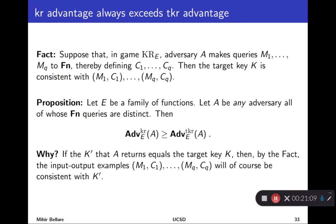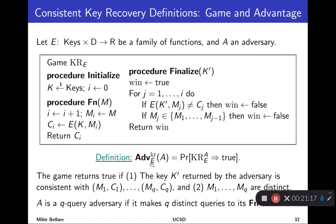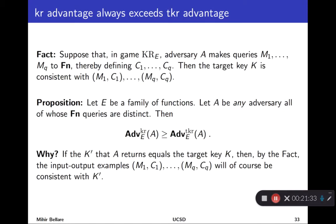So, how do we kind of think about or understand these different metrics? Well, I guess I forgot to say over here, first off, that again, as usual, there's a probability of winning the game for any particular adversary. And that gives rise to its advantage, which is simply that probability. The higher this is, the better the adversary is done, the lower it is, the worse it's done. So, one way to understand this is to see that consistent key recovery simply relaxes the winning condition for the adversary. If an adversary can win the target key recovery game, it will certainly win the consistent key recovery game, but not necessarily vice versa.